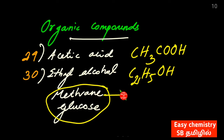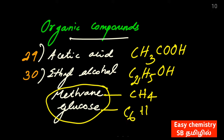Methane is CH4 and glucose is C6H12O6. That is what we have done. Chemical reactions are easy to get from here.